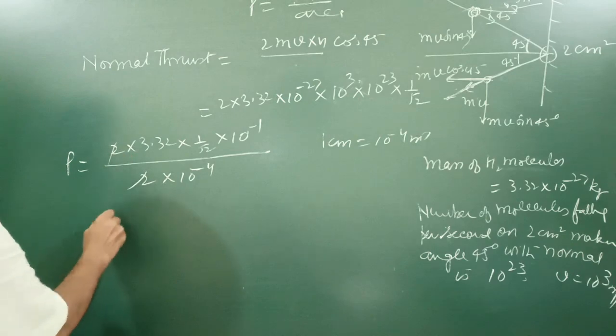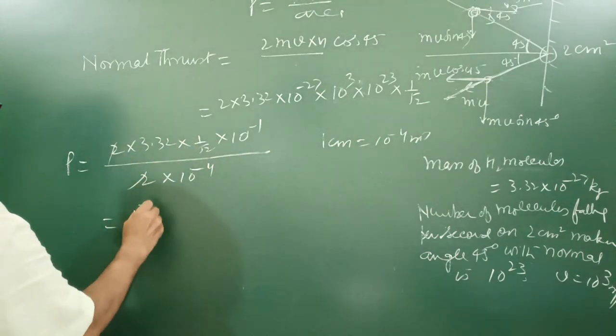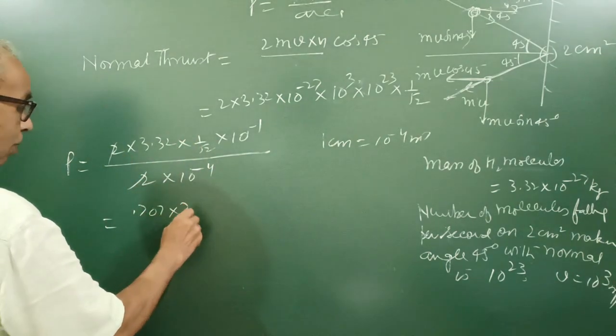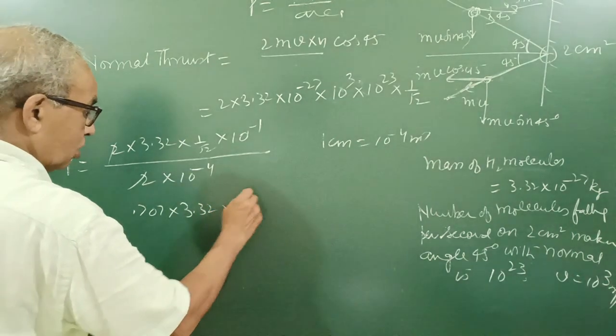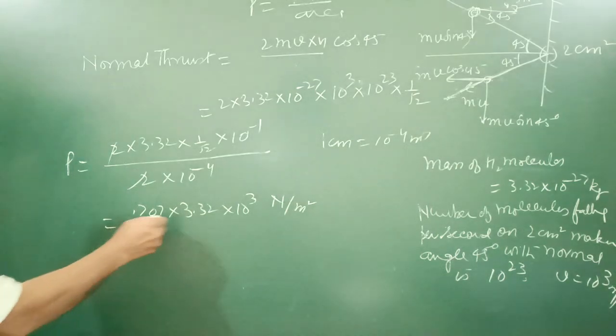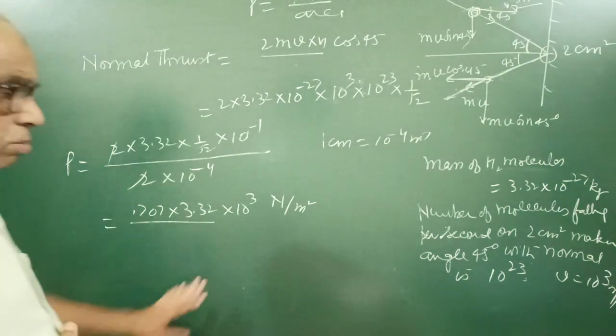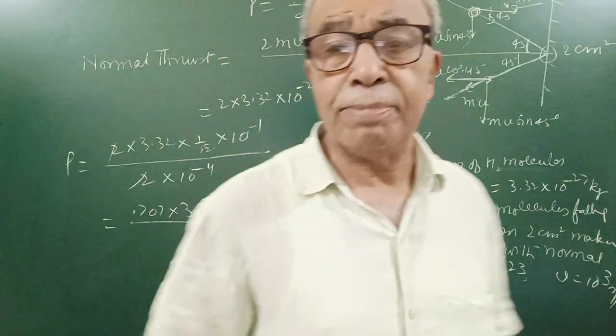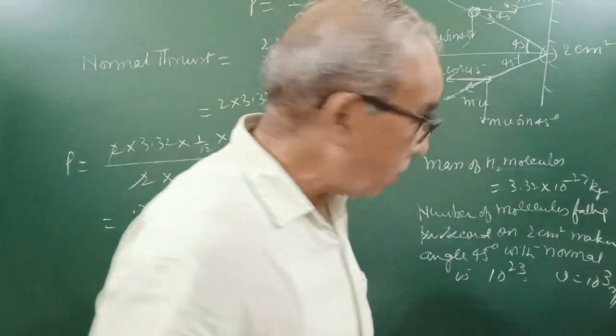So it is 2 here, 1 by root 2, 0.707 into 3.32 into 10 to the power 3 Newton per meter square. So if you multiply, you will get the answer. So this is one question here. Now I take another question.